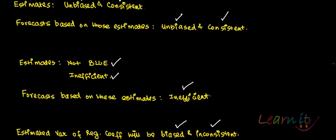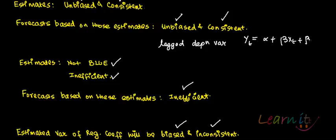One more thing I want to tell you is that if the model contains a lagged dependent variable, that is, if you have yt = alpha + beta*xt + beta2*yt-1 + ut, where the lagged dependent variable is also an independent variable, then the consistency property is not going to hold.